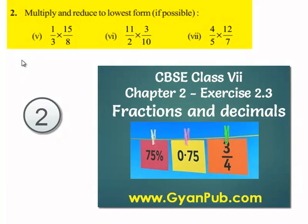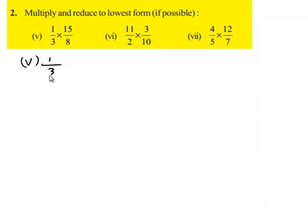Take down the fifth bit in the second question. That is 1 upon 3 multiplied by 15 upon 8. This is equal to 1 multiplied by 15 upon 3 multiplied by 8. Here 3 in the denominator goes in 15 of the numerator by 5 times, and this is equal to 1.